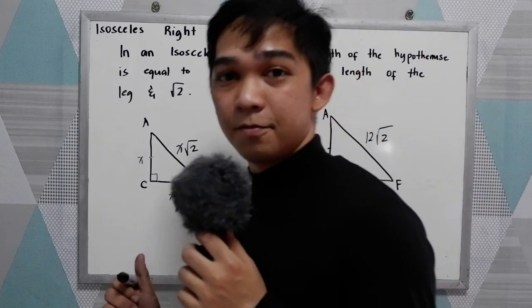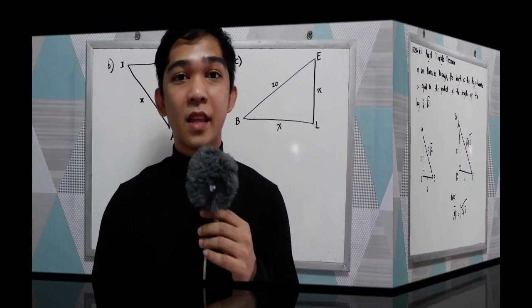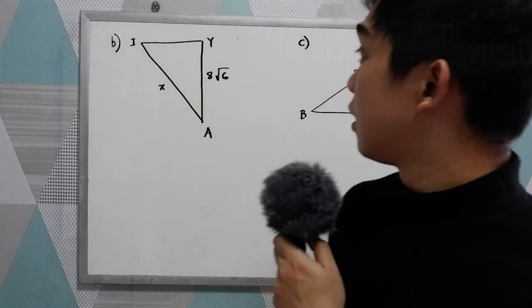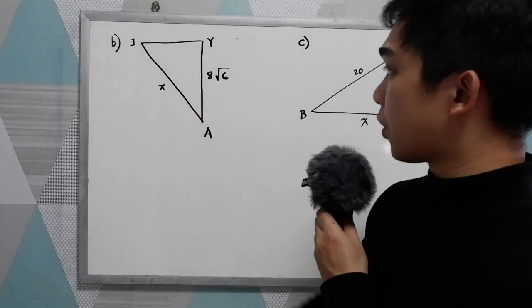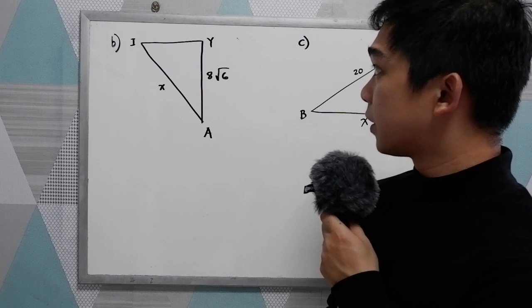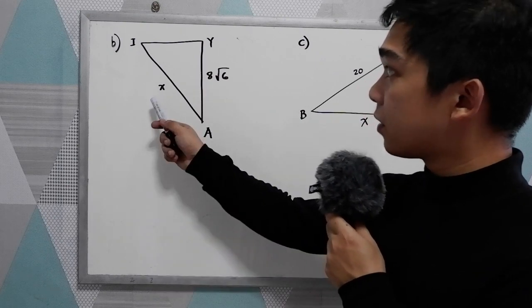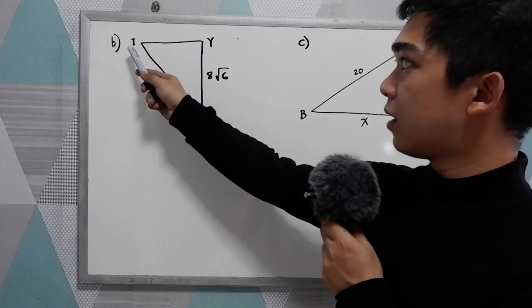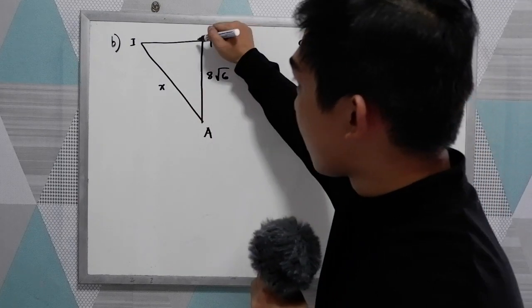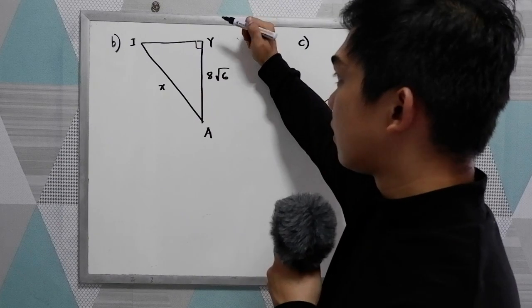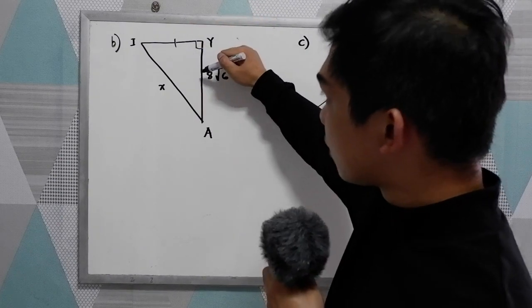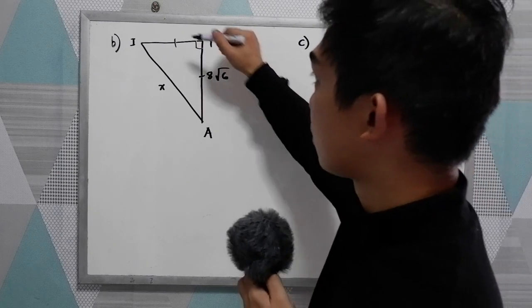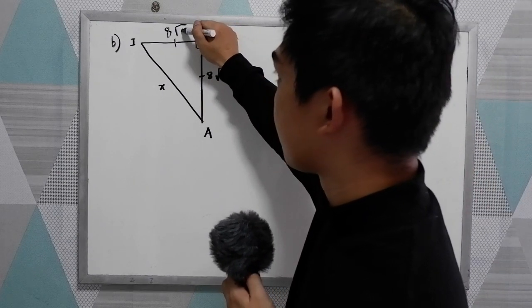For our second example, we need to solve for X. We have triangle IYA with X as the hypotenuse and a 90-degree angle. Our legs measure 8√6 and 8√6.